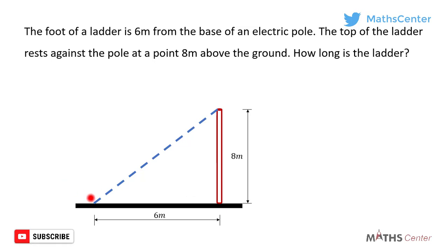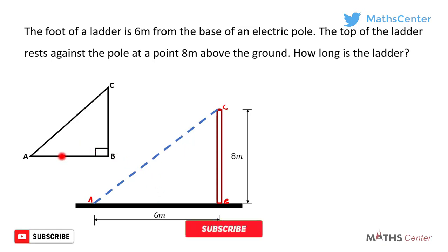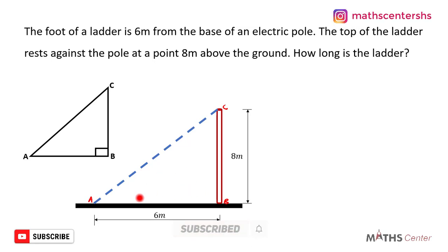Let's call this point here point A, this point here point B, and this point point C. The question wants us to find how long the ladder is, so we are finding the length of the ladder. As you can clearly see, we can form a right-angled triangle from what we have here. We have point A here, point B here, and point C.